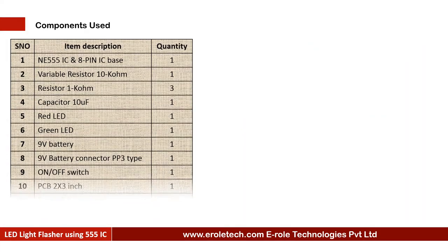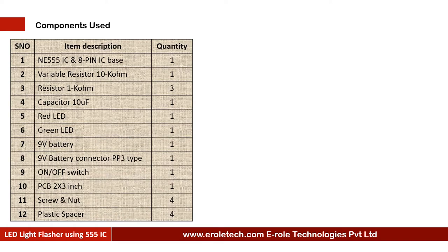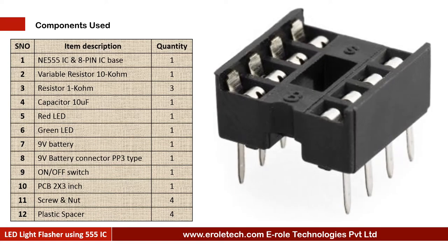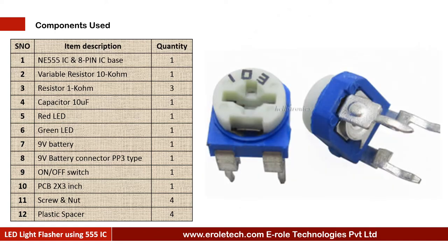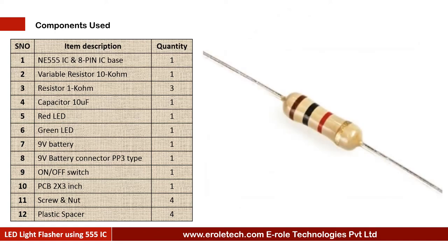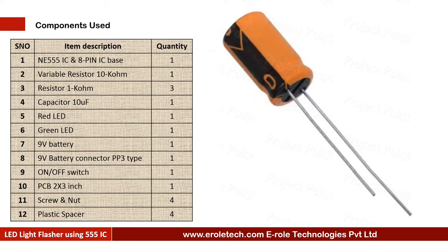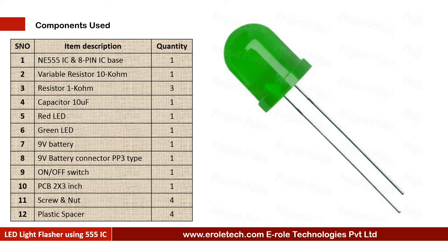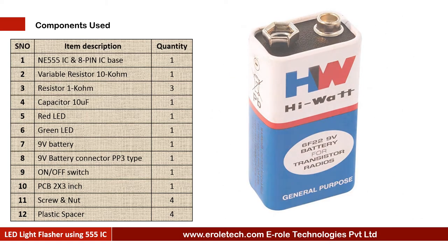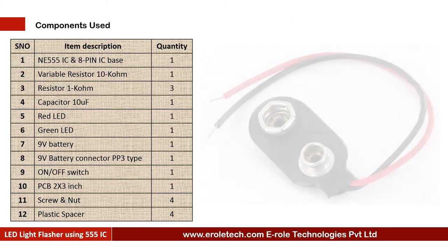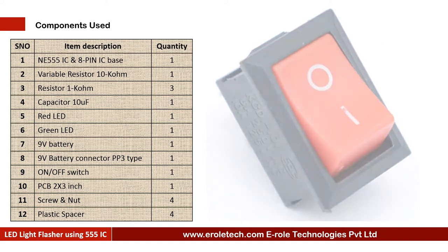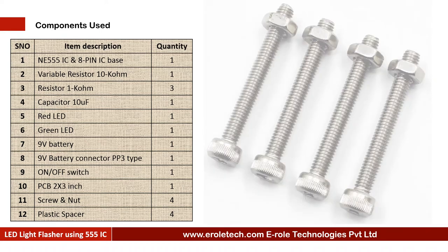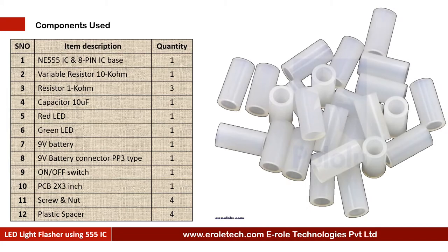These are the components which are needed in this project: 555 timer IC, 8-pin IC base, 10 kilo ohm variable resistor, 3 x 1 kilo ohm resistors, 10 micro farad electrolytic capacitor, 1 red LED, 1 green LED, 9 volt battery PP3, battery connector, on-off rocker switch, PCB, 4 screws with nuts, and 4 plastic spacers.